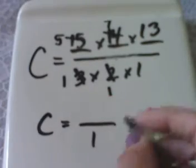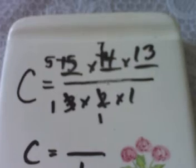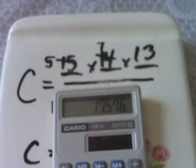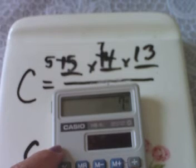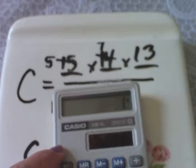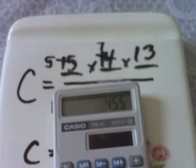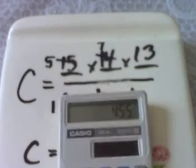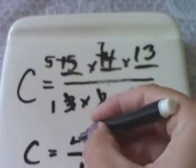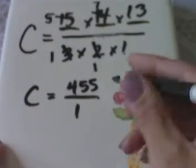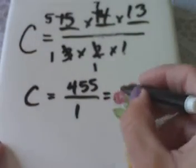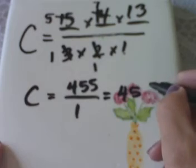We can tell that the denominator is going to be 1. And then we can go ahead and use a calculator to figure out what the numerator is going to be. 5 times 7 times 13, and we get 455. And of course 455 divided by 1 would be 455 in simplest form.